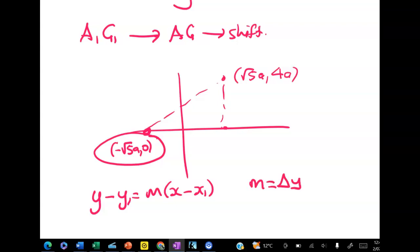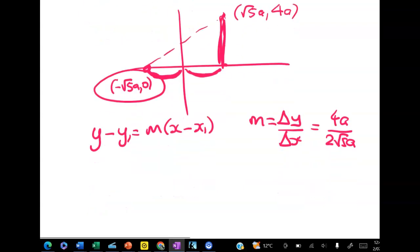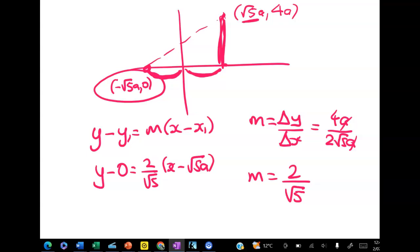The gradient is equal to the change in y over the change in x. The change in y here is equal to 4a. And the change in x is one lot of root 5a to here and another lot here. So it's going to be 2 root 5a. That gives me m is equal to 2 on root 5. And y1 is 0, we get y minus 0 is equal to 2 on root 5 times x minus negative root 5a. So that's my x1.